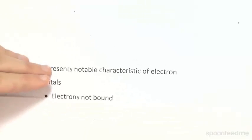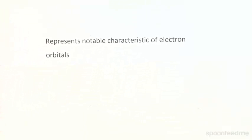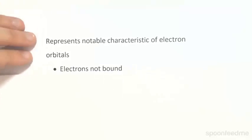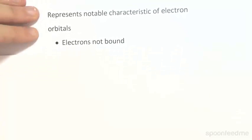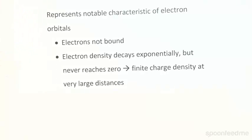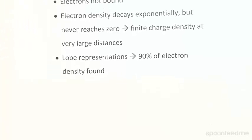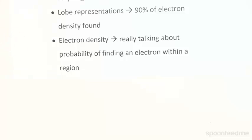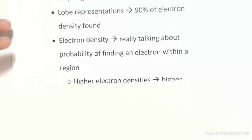These representations display a very notable characteristic of electron orbitals: electrons are not bound within a specific perimeter. As we saw in the graph, electron density decays exponentially towards zero but never actually reaches zero, so there is a finite charge density even at massive distances from the nucleus. Lobe representations actually represent 90% of electron charge density — surfaces of common electron density where most of the charge can be found. When we talk about electron density, we're mostly talking about the probability of finding an electron within a region: the higher the electron density, the higher the probability. These representations are not absolute.